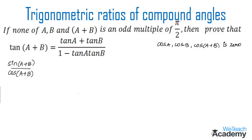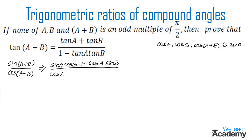By writing the formula of sin(a+b) and cos(a+b), we get sin a cos b plus cos a sin b, divided by cos a cos b minus sin a sin b.